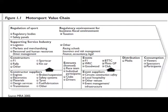Much of the content for this particular lecture comes from a book called Motorsport Going Global: The Challenges Facing the World's Motorsport Industry. This particular graphic is from page 3 in the chapter titled 'The Global Motorsport Business,' which highlights the key stakeholders in the motorsport industry. One of the challenges I have in designing these lectures is that there aren't a lot of textbooks available on this particular topic, and so this is one of the only books out there that actually covers motorsport from a very much academic perspective.